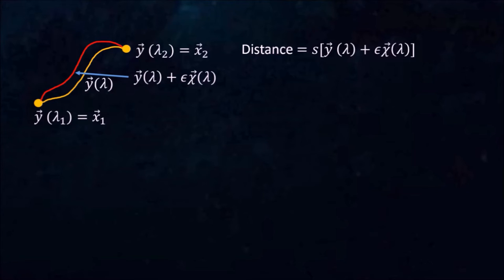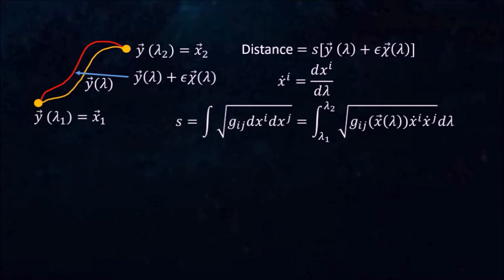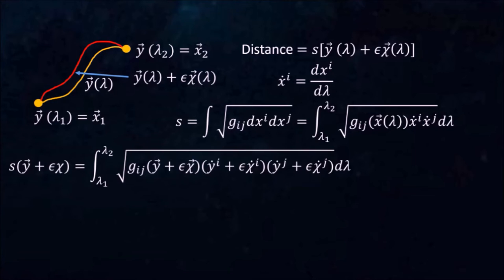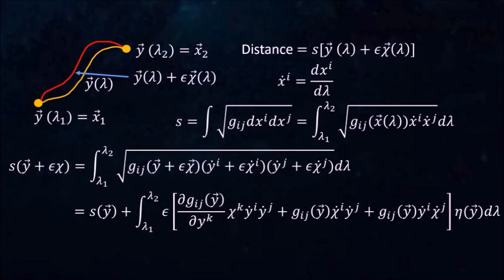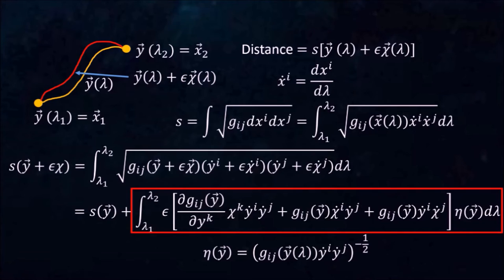We can now expand s in powers of epsilon. To simplify our notation, we let x-dot be the derivative of x with respect to lambda. The distance along an arbitrary curve, x, can then be expressed as an integral of lambda. The distance along the red curve is given by this integral. A Taylor expansion up to the first order in epsilon gives us the following expression, where eta is short for this. If y is the curve that minimizes s, then this entire expression must be 0.